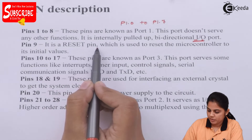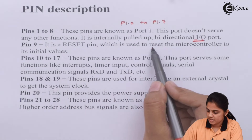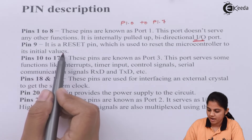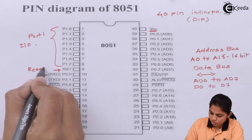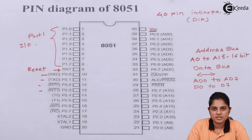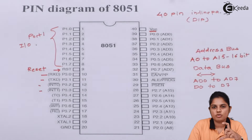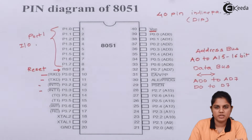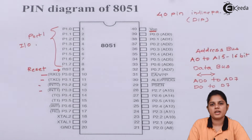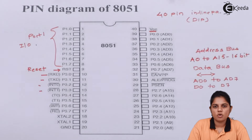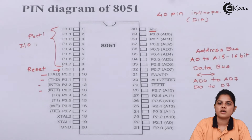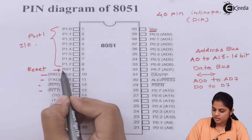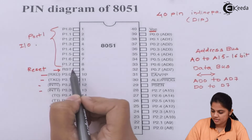Pin number 9 is the reset pin, which is used to reset the microcontroller to its initial value. After execution of one cycle or one program, it resets to the initial value — all values go to 0 — and then it starts executing the program again. That is called a reset: it comes back to the initial position and starts the next execution cycle.